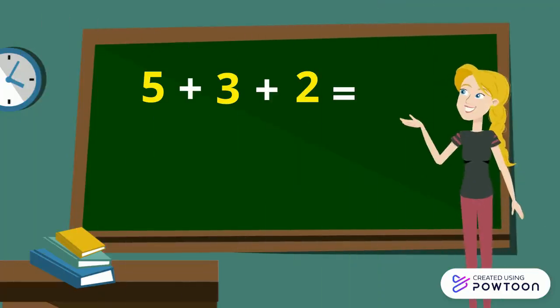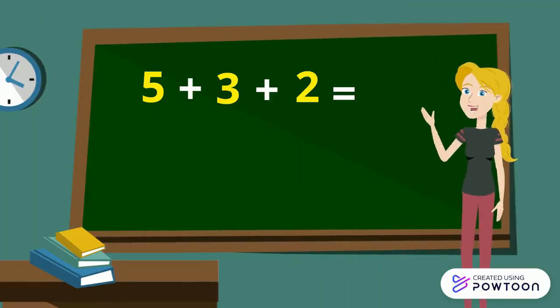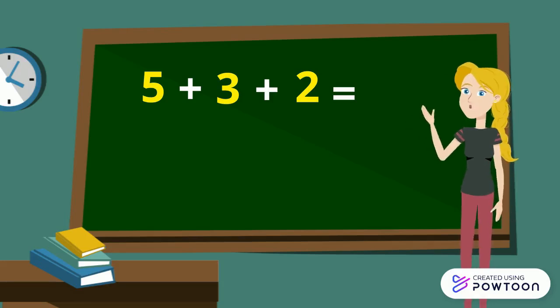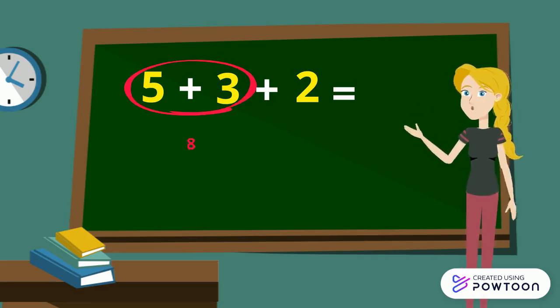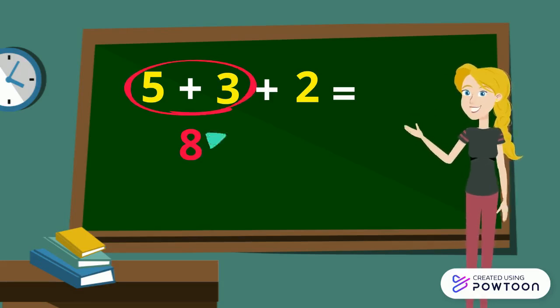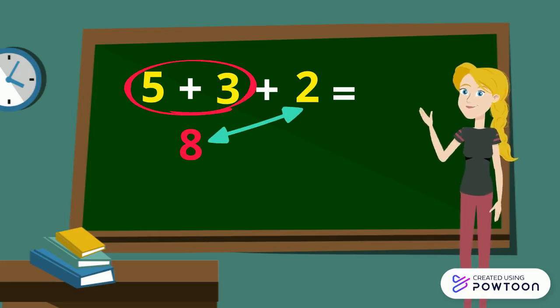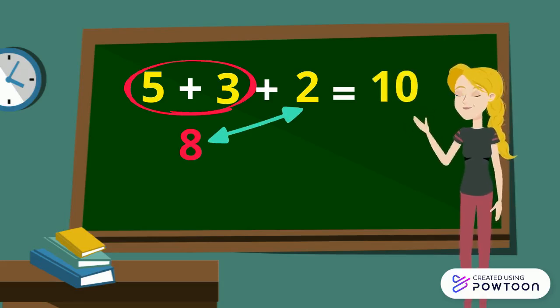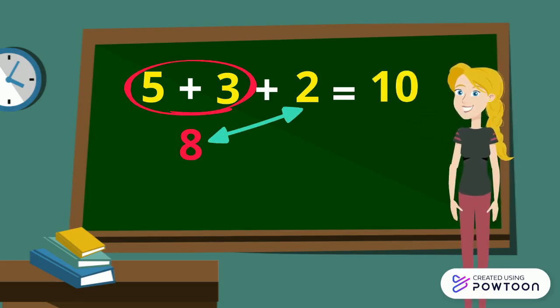Another example: 5 plus 3 plus 2. 5 plus 3 equals 8. Then we add 8 with 2. The answer is 10. So, 5 plus 3 plus 2 equals 10.